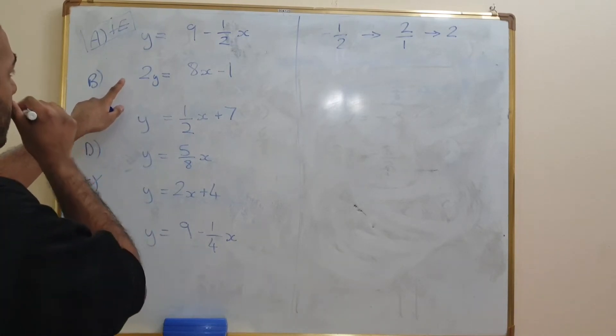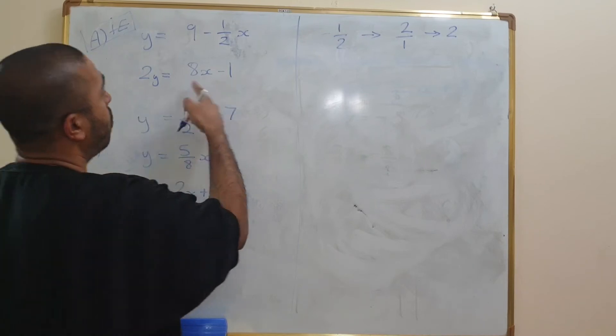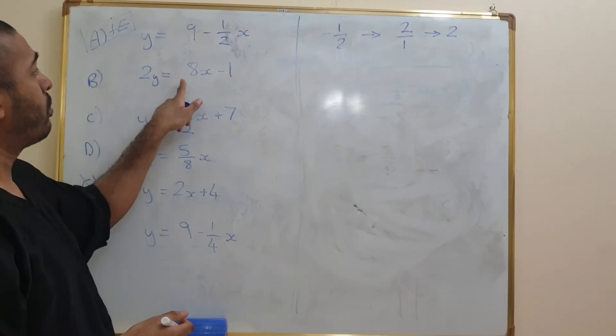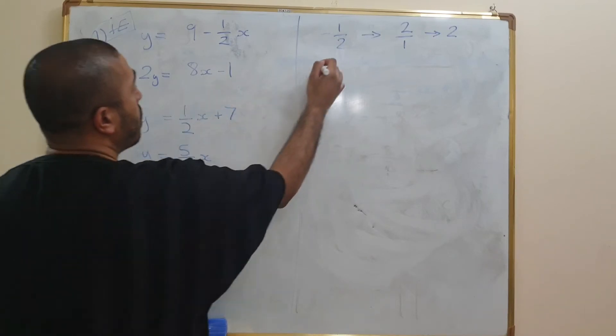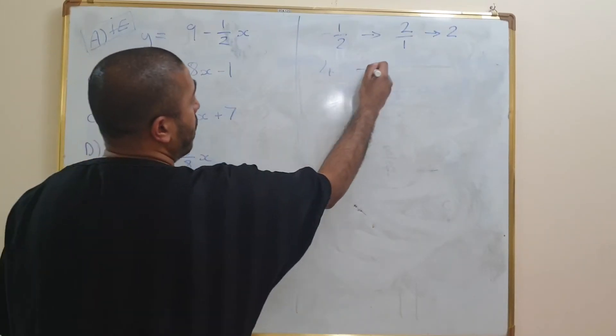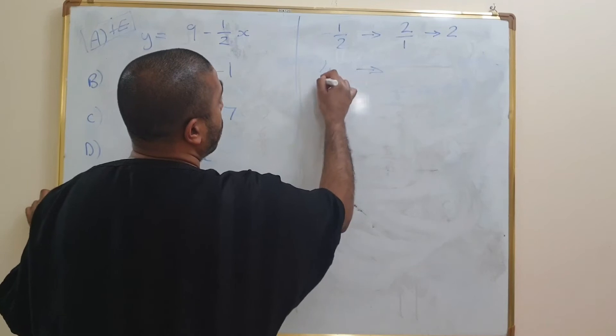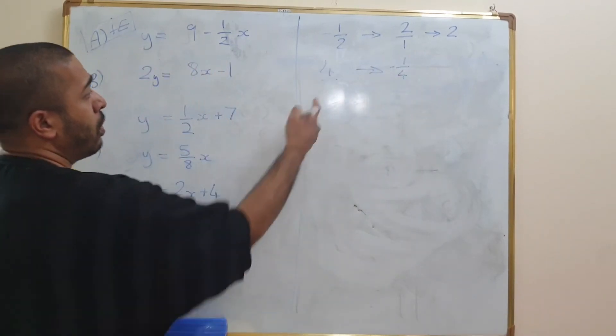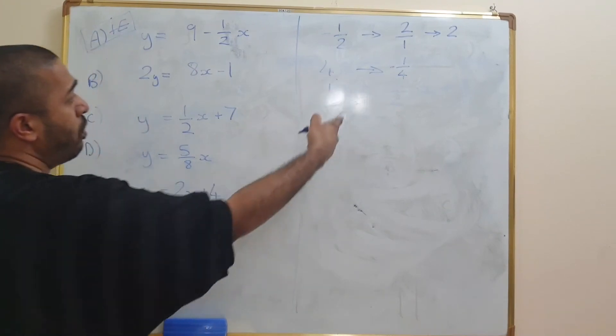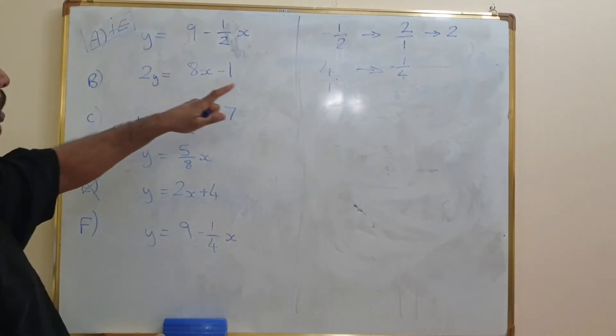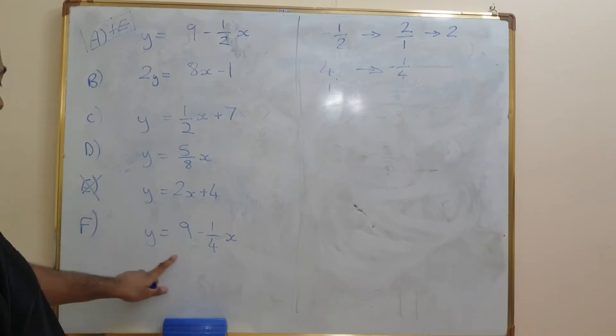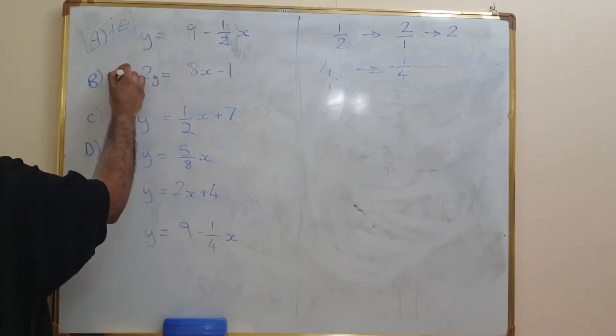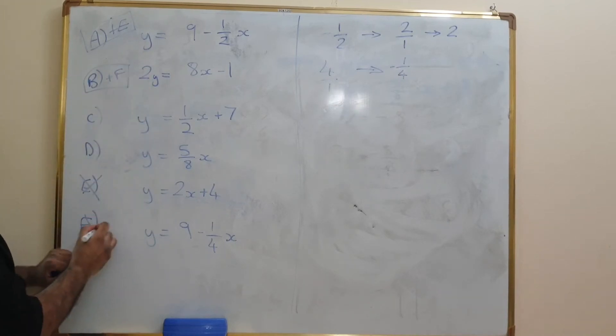Right, let's have a look at the next one. 2Y equals 8X minus 1. Well, I have to divide this by 2 in order to get Y equals 4X minus 1 half. So this one is 4, and its negative reciprocal is going to be negative 1 over 4. Because if we change this into a fraction, it's 4 over 1. So do we have a negative 1 over 4? Yes, we do, this one here. So it's B and F. Cancel that one.